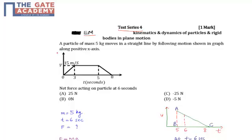The question says, a particle of mass 5 kg moves in a straight line by following motion shown in the graph along positive x axis.